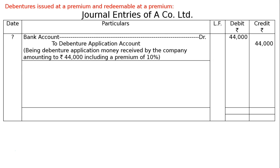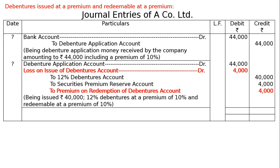Next, Debenture Application Account is debited Rs. 44,000. Loss on Issue of Debentures Account is debited Rs. 4,000 — written in red — because the debentures are redeemable at a premium of 10%. The credit goes to Premium on Redemption of Debentures Account Rs. 4,000. Whatever extra amount we will pay at redemption beyond what was collected at issue is treated as a loss on issue.